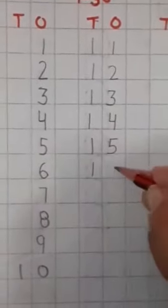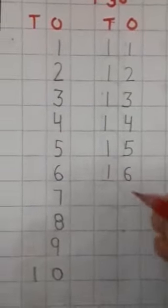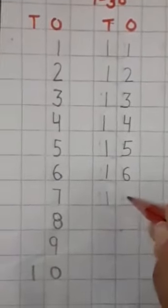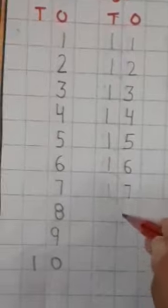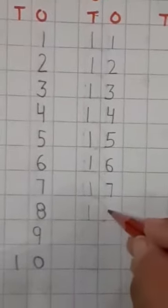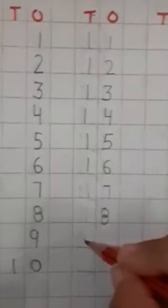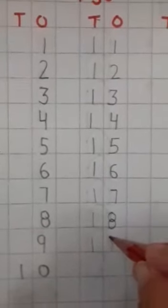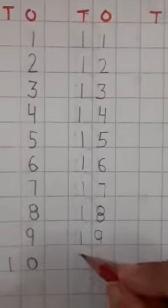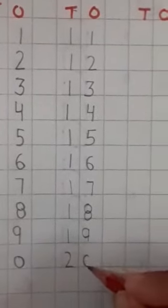1, 6, 16. 1, 7, 17. 1, 8, 18. 1, 9, 19. Now, next one is 2, 0, 20.